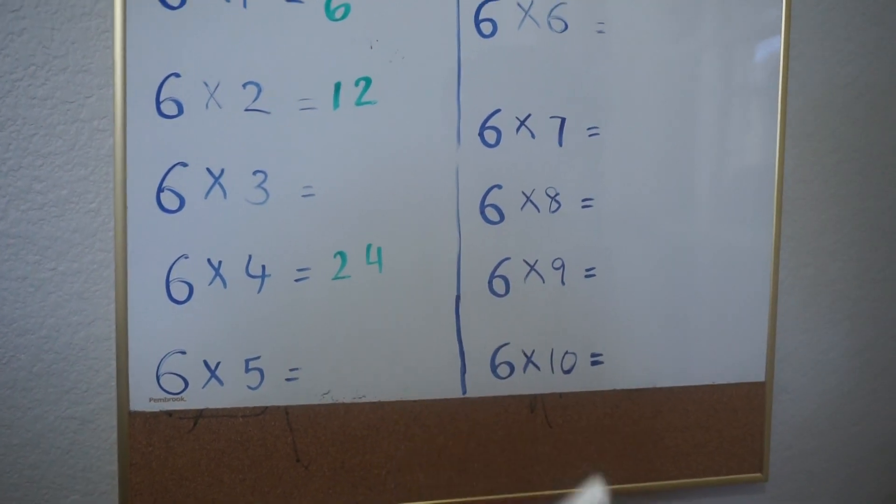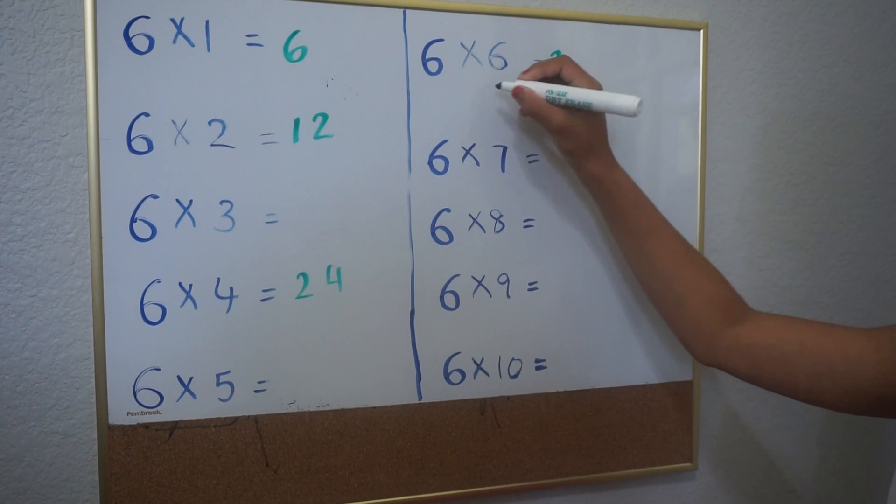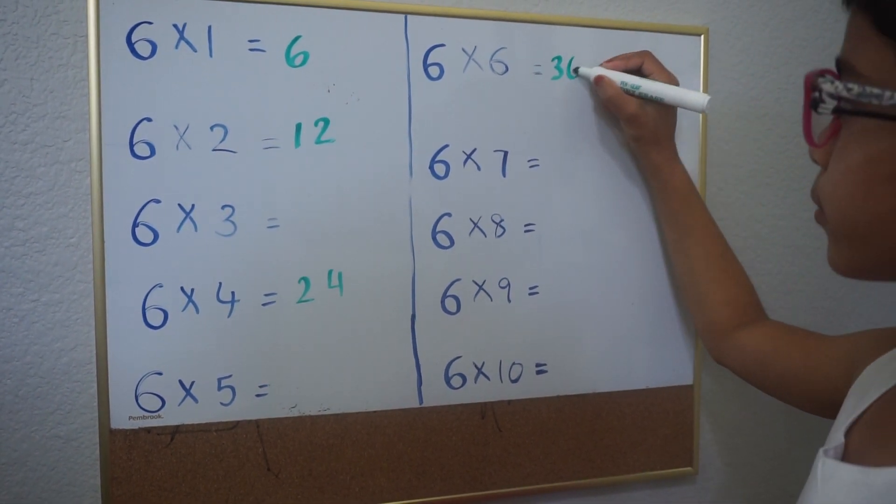5 is an odd number, so you skip it to 6. Half of 6 is 3, and you carry the 6 and put it over here. 36.